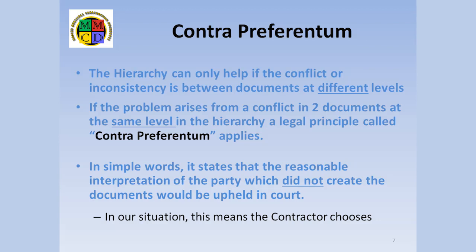Because of this legal principle, the CA cannot arbitrarily choose the more expensive option. If the owner wishes the more expensive option, then the CA must issue a change order with cost and possible time adjustments made. The reality is that the owner erred by allowing there to be a conflict in the documents, and the contractor is not expected to bear the burden of that mistake.